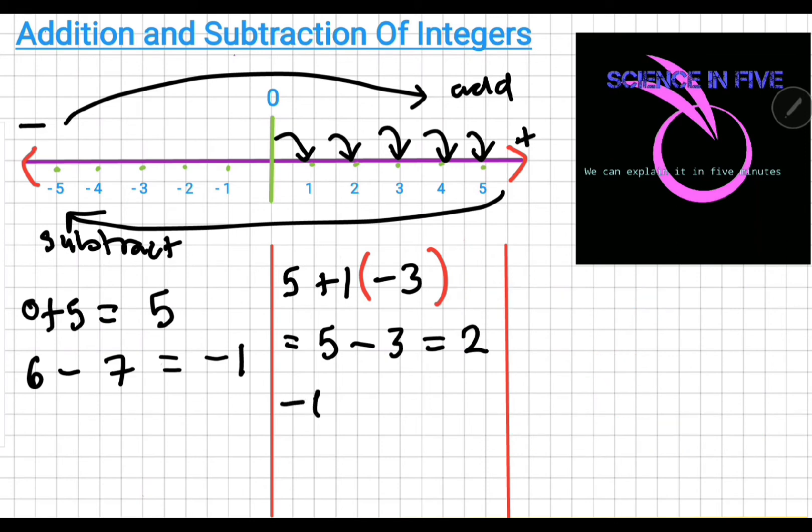Similarly, if I had negative six plus negative eight, I would convert the positive addition sign to a subtraction sign to give me negative six minus eight. Now, I know that from negative six I have to move eight steps back. From negative six, if you move eight steps back, you end up at negative 14.